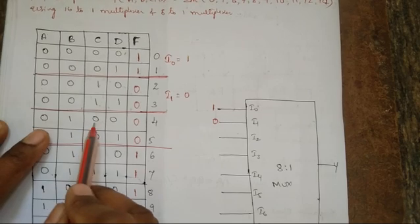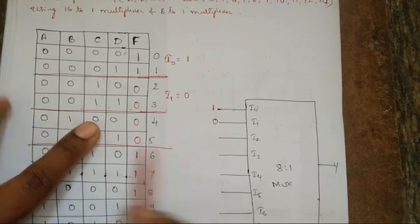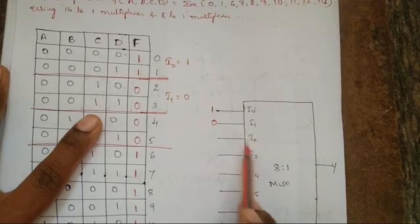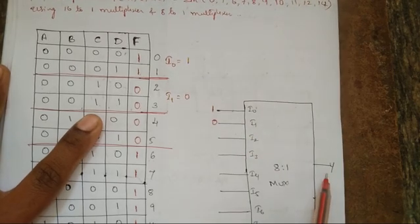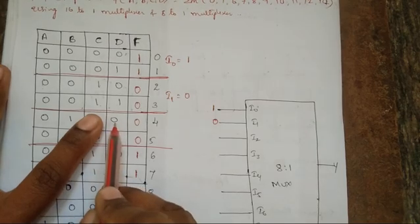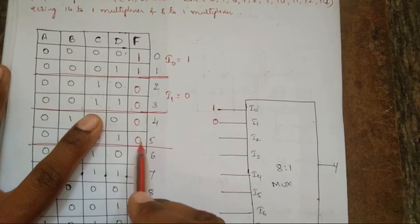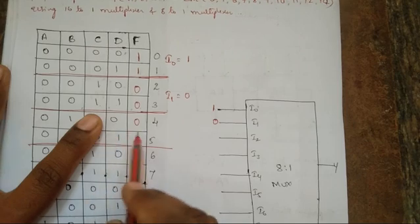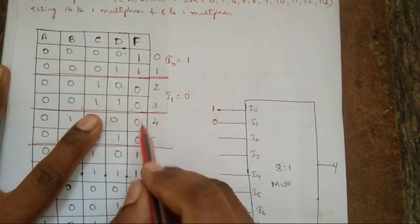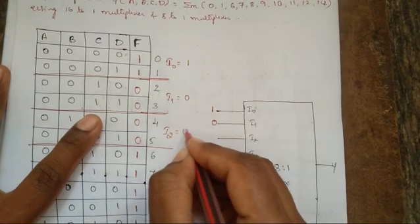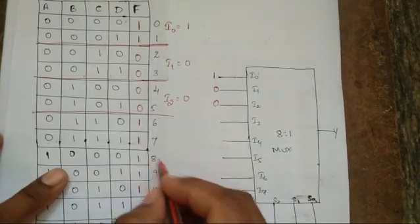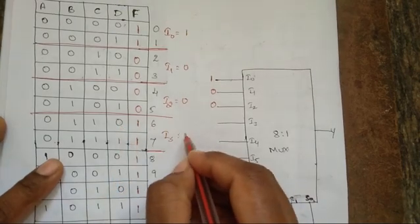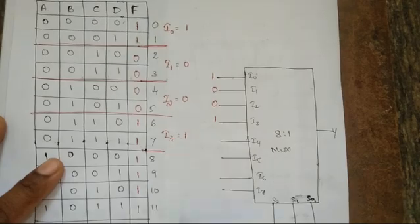When the select lines are 0,1,0 — ABC=010 — I2 will be selected. When D=0 the output is 0, and when D=1 the output is also 0, so irrespective of D the output is 0. Therefore connect 0 to I2. Similarly for I3, when ABC=011, irrespective of D the output is 1, so connect 1 to I3.